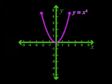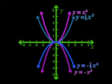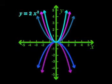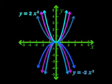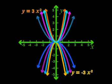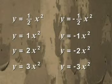We decided to call the graph of y equals x squared the parent graph. Then we compared graphs with different values for a with the parent graph. But all these graphs had something that stayed the same — the turning point was always at (0, 0). And why do you think that happened? I think that's because all our graphs had a formula with q equal to 0.